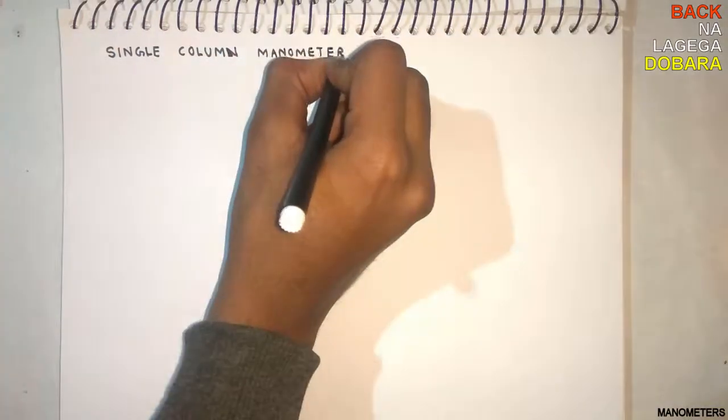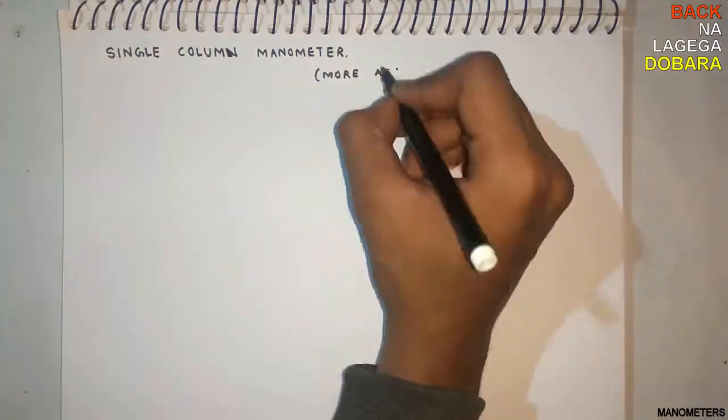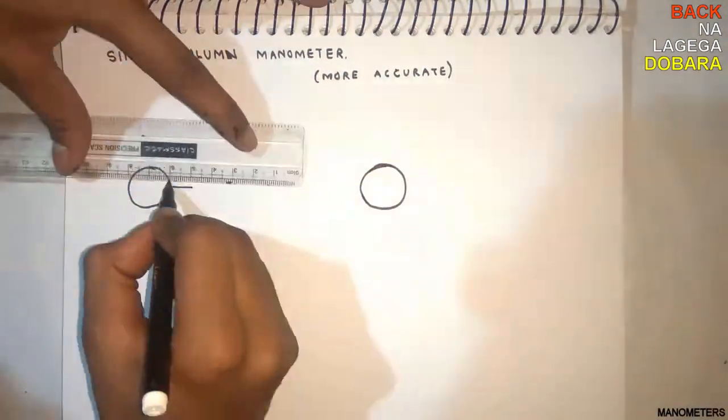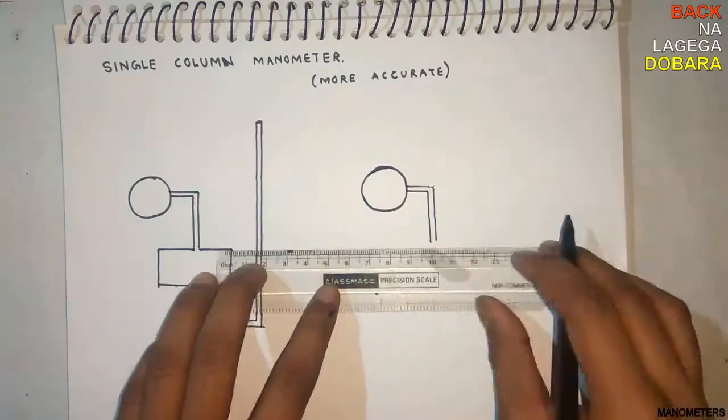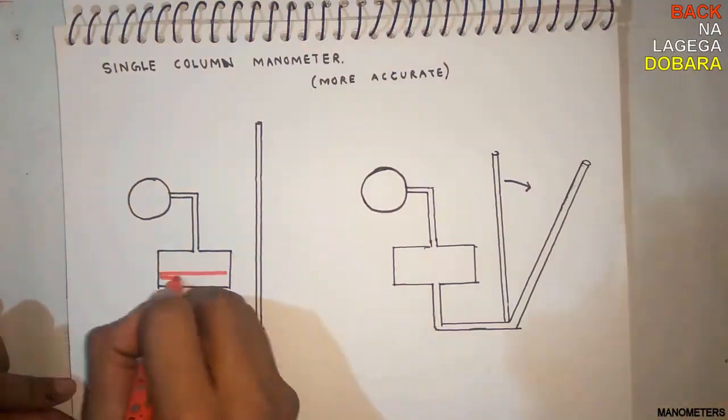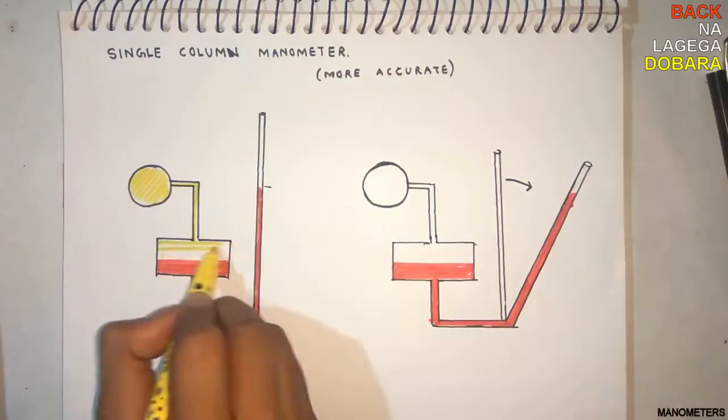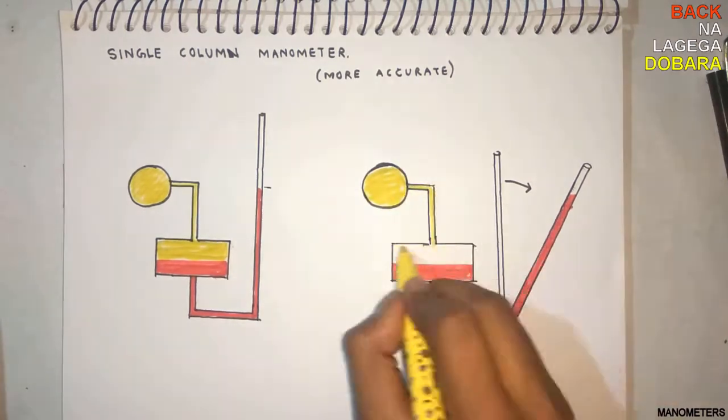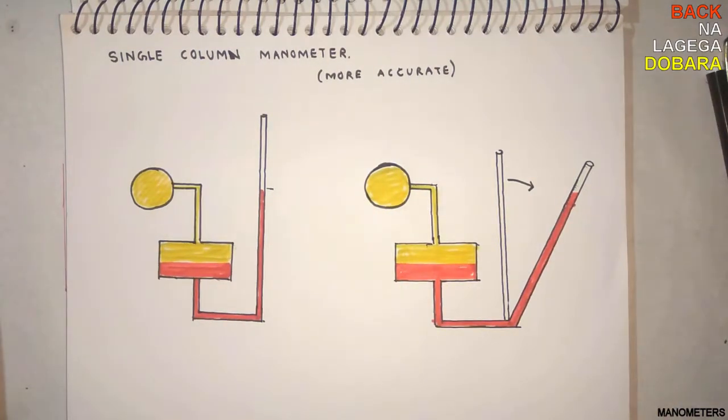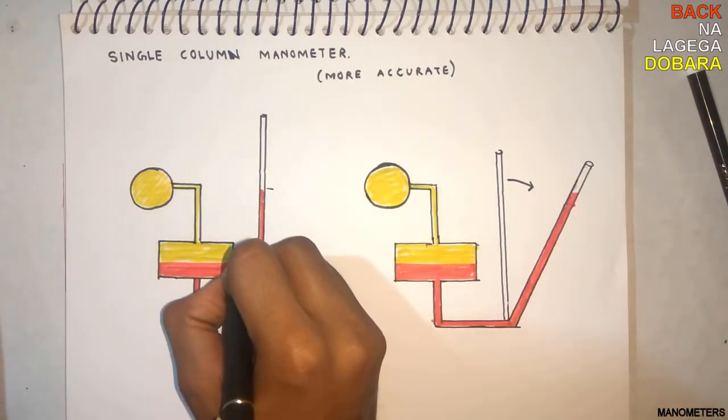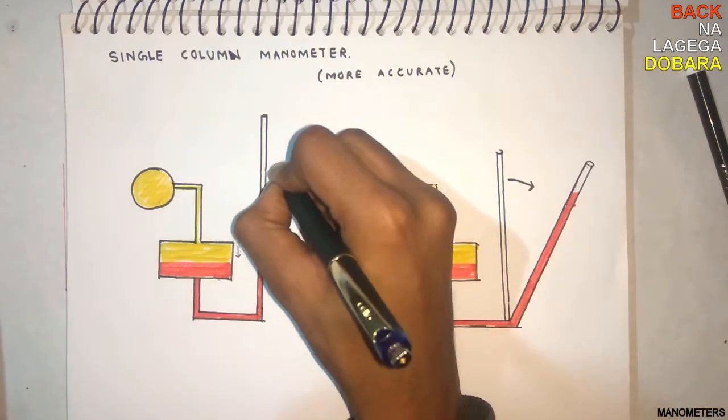Single column manometer, which is more accurate. The only difference is the cross-section area, as there are two cross-section areas. For small change in larger area, there is a huge change in the small pipe which gives us accurate reading.